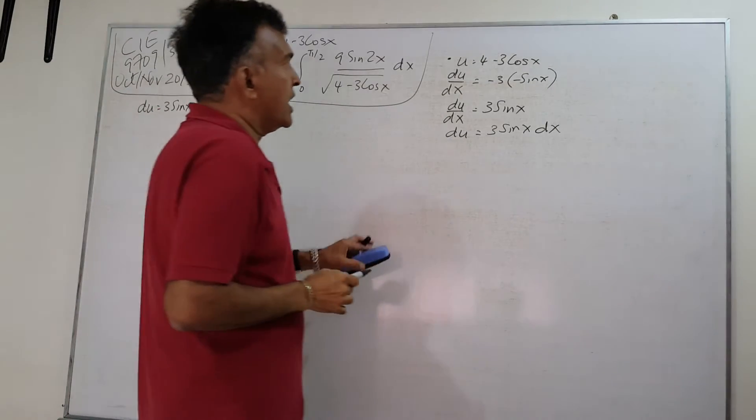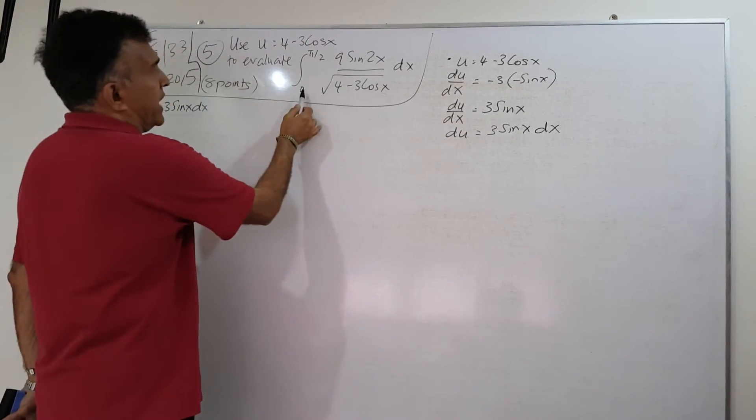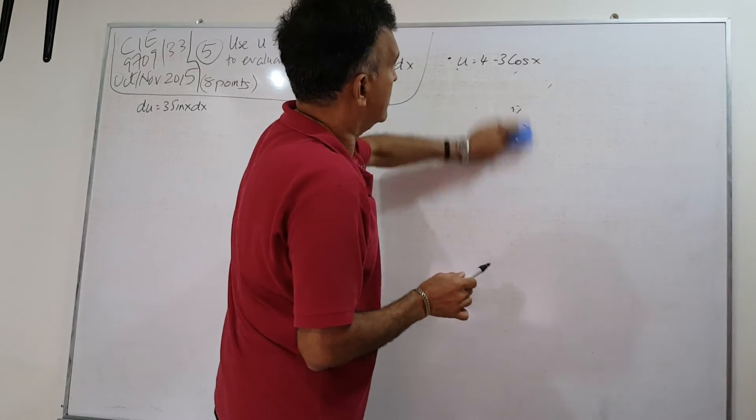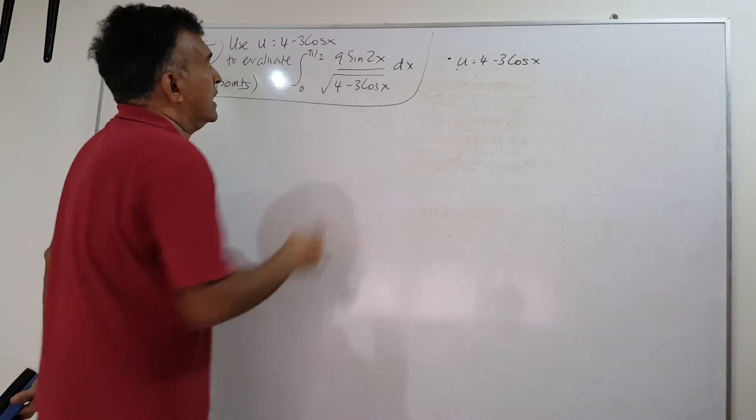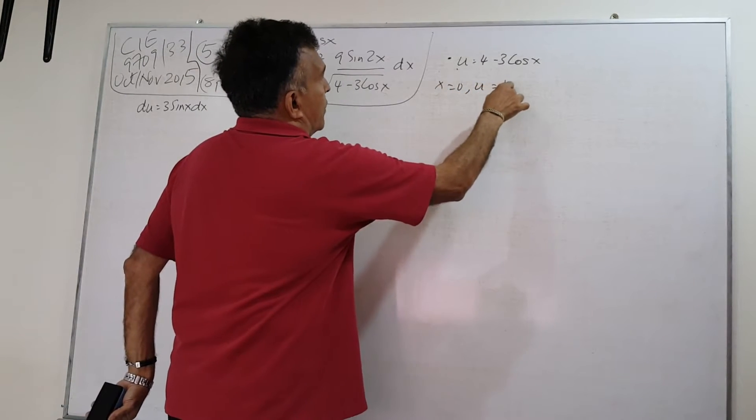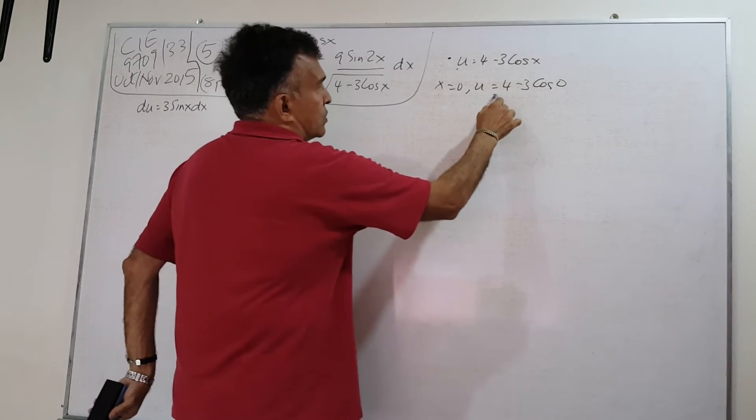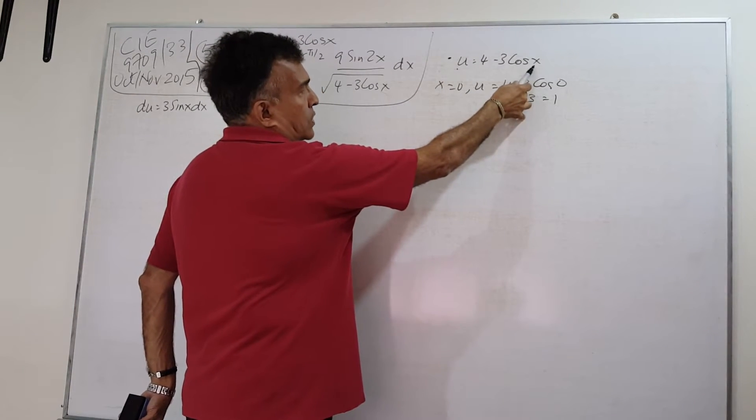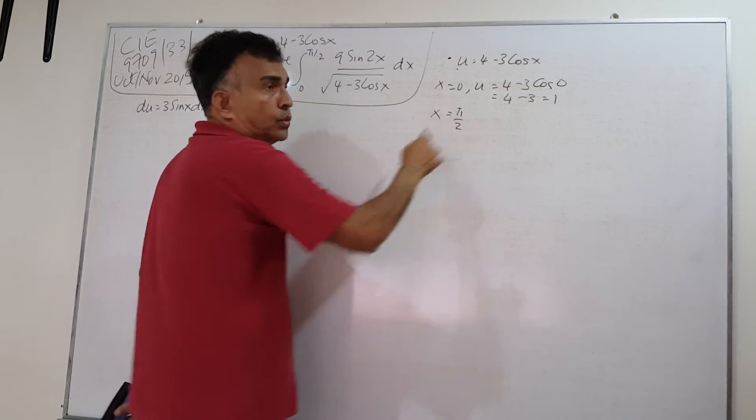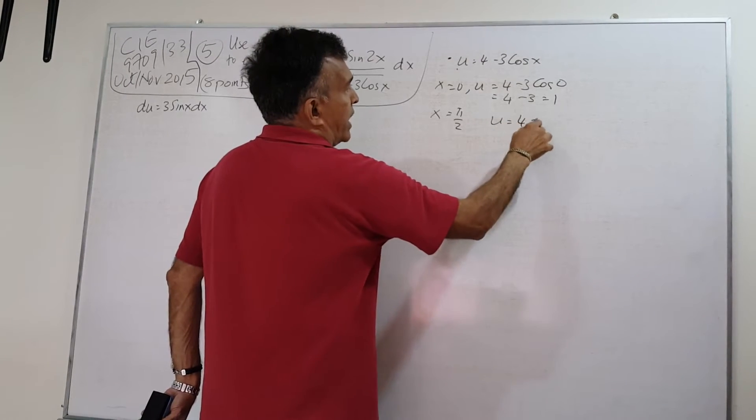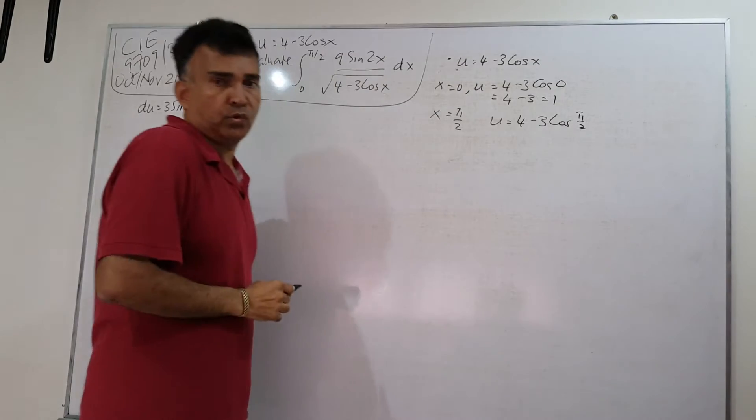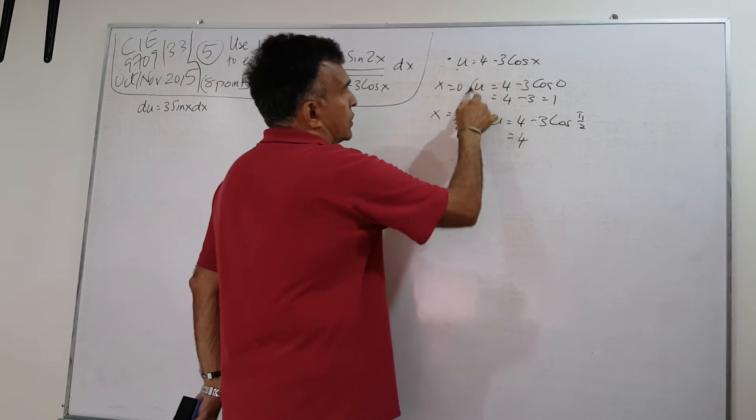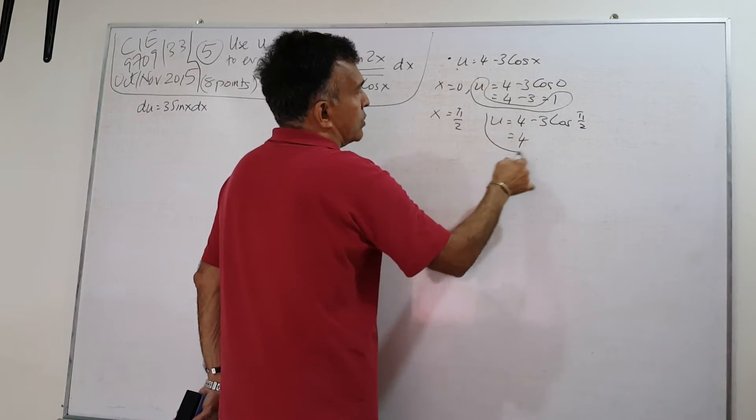What else do we need? Let's look at the limits. x goes from 0 to π over 2. So when x is 0, u will be 4 minus 3. Cos of 0 is 1, so I have 4 minus 3 is 1. Let's take care of x equals π over 2, the upper limit. u will be 4 minus 3 cos π over 2. Cos of π over 2 is 0, so we will have 4. So we know the lower limit, u equals 1, and the upper limit, u equals 4.